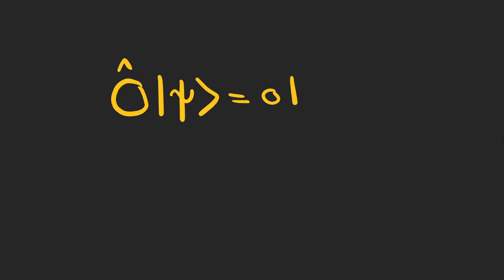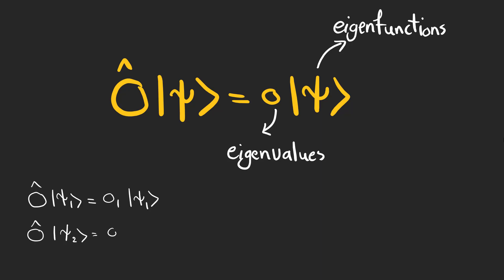To find these determinate states, we need to solve an eigenvalue equation for the observable O. Psis are eigenfunctions, and Os are eigenvalues, meaning that measuring O on psis always yields O. Pay attention that eigenvalues are some numbers, and the collection of all eigenvalues of an operator is called its spectrum.